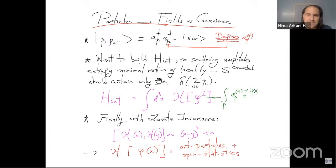we want to build some interaction Hamiltonian so that the scattering processes involving these elementary particles satisfy the very minimal notion of the of locality that goes into cluster decomposition, which very precisely said that if I look at the connected part of the scattering amplitude for a bunch of particles, there should only be one overall delta function for momentum conservation.